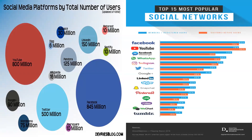Regarding social media platforms by total number of users, as of 2021, 847 million are using Facebook as a major communication platform. For learning, there is Google and YouTube. In the ranking, Facebook is the top most popular social media platform. We have the top 15 most popular social networks.